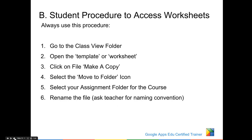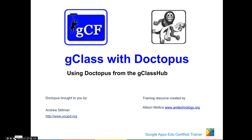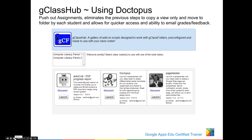There's an easier way to do this: GClass with Doctopus. In the GClass hub, there's the Autocrat, the Doctopus, and the PageMeister scripts. With Doctopus, you can push out these worksheets, eliminating those previous steps to copy a view-only and move to the folders for quicker access by the student. In addition to that, you get the ability to email grades and feedback through this one spreadsheet.